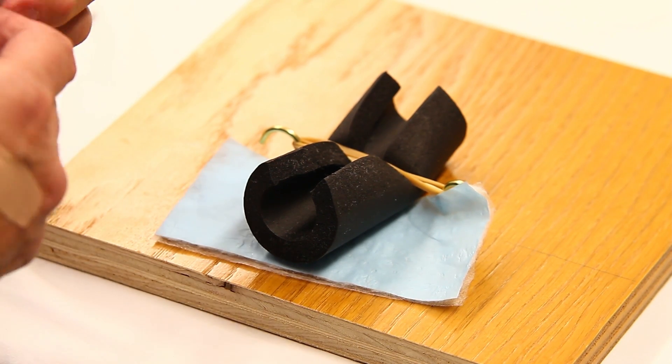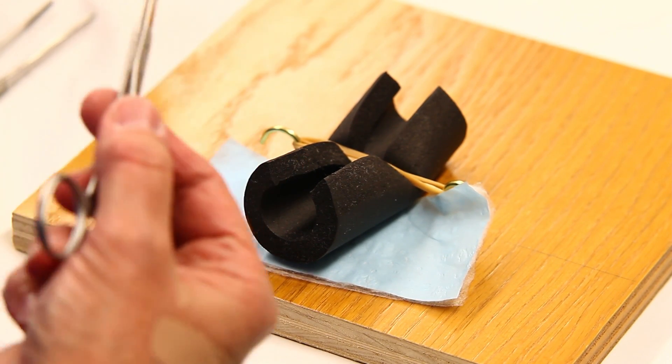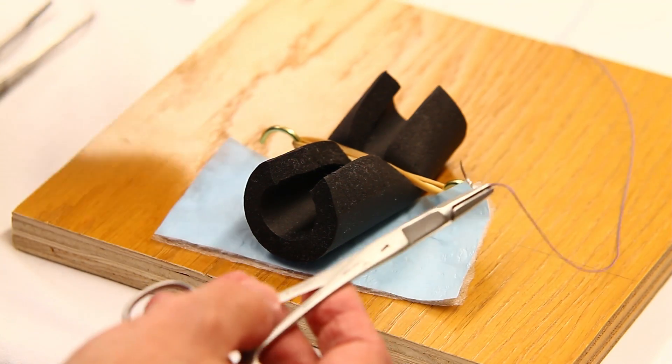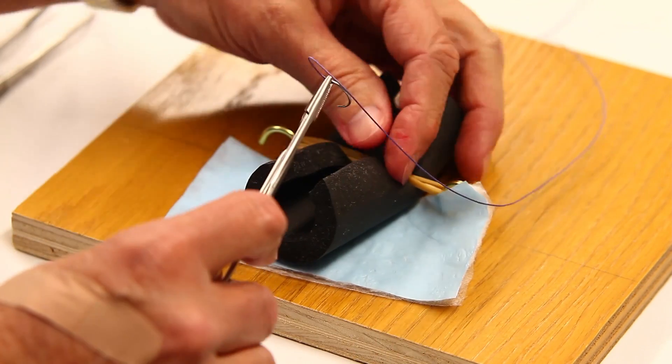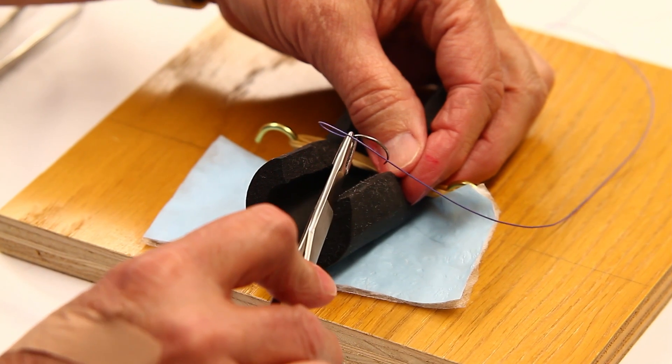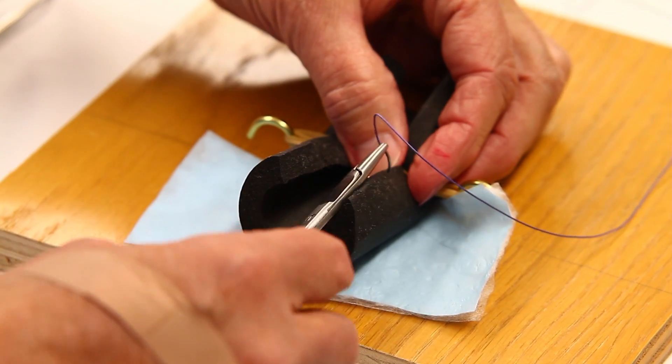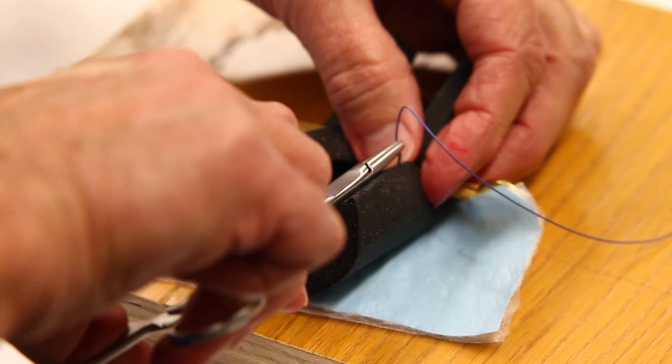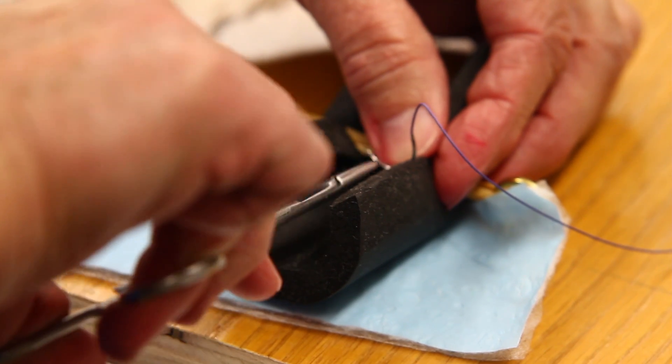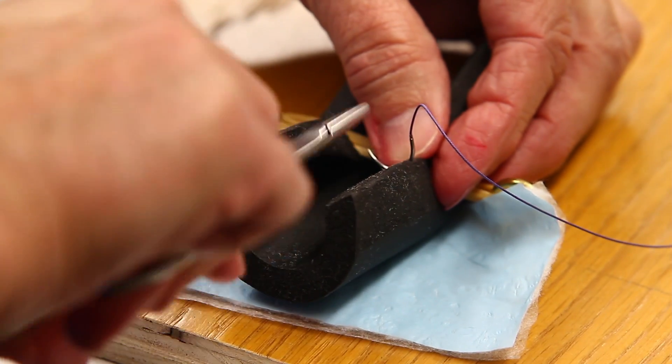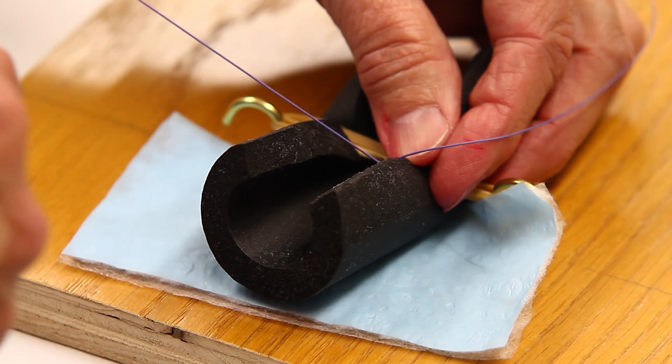The suture we're going to use is CT2, and it would be 3-0 or 4-0 Vicryl. You enter the spongy tissue with a very delicate touch, release the needle, grab it, and follow through with the arc of the needle so that you don't tear it through.